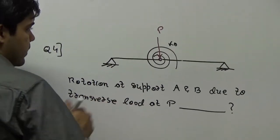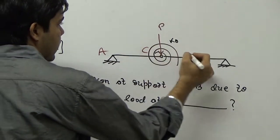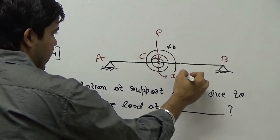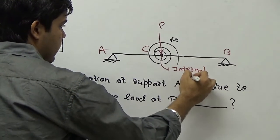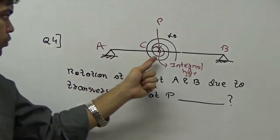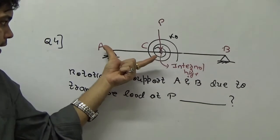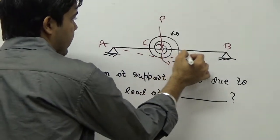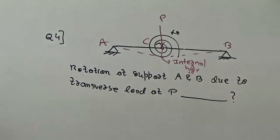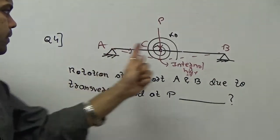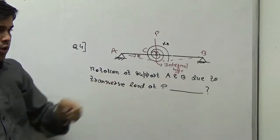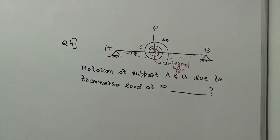The last problem from structures: there are two links AC and CB connected by an internal hinge. The problem was given in words — I've converted it to figure format. It was stated that these two links are deflecting along a straight line, and it was asked to find the rotation at each support when there is a transverse load acting over the internal hinge.